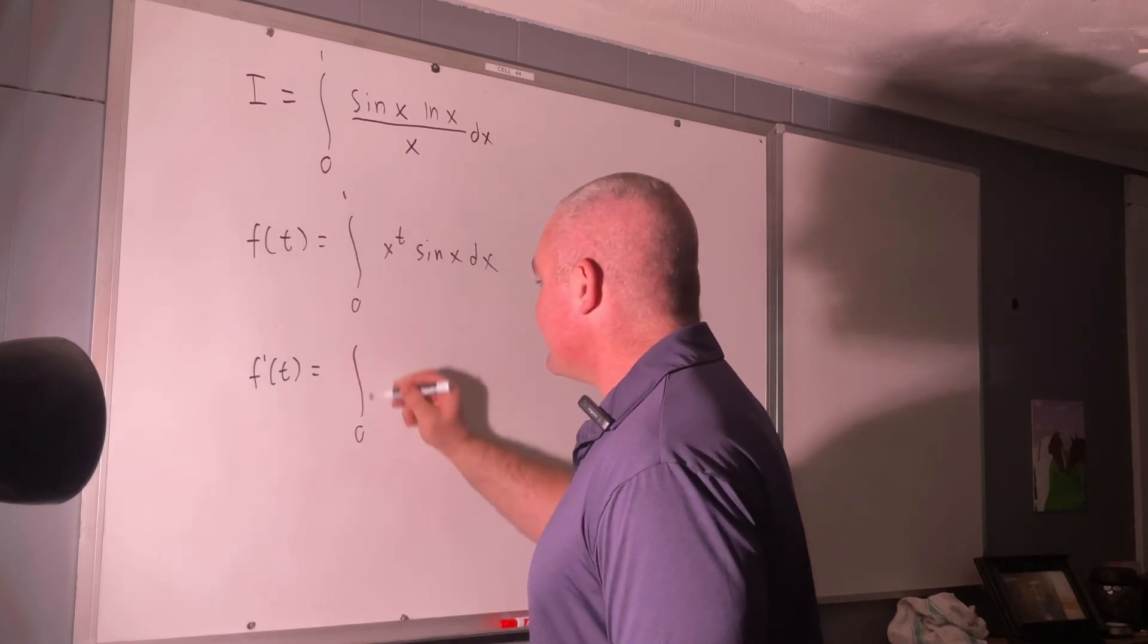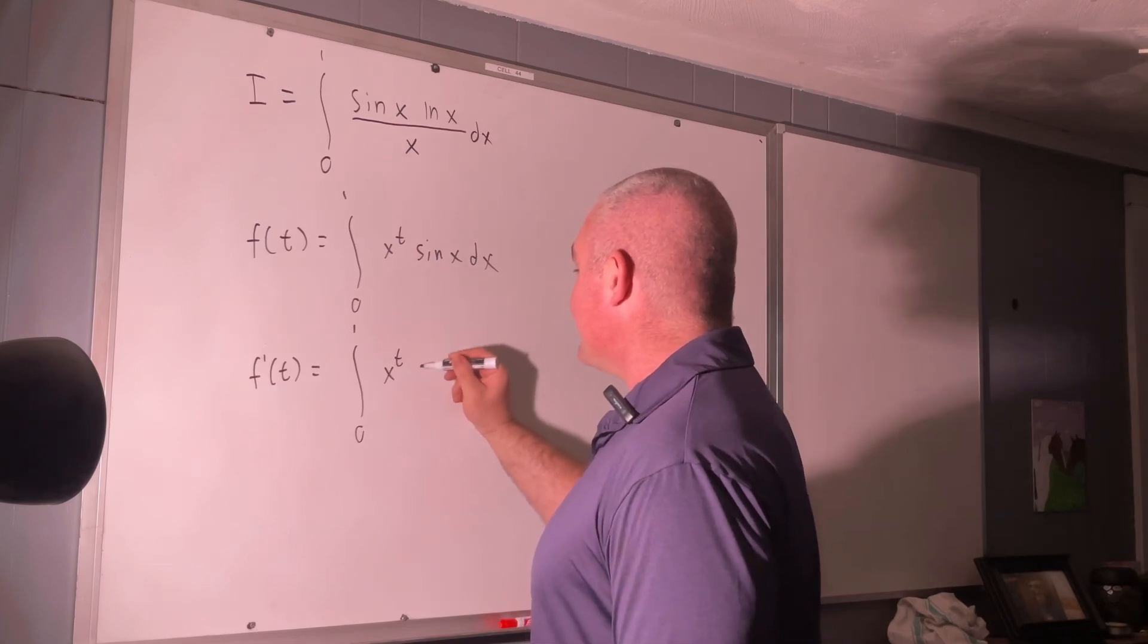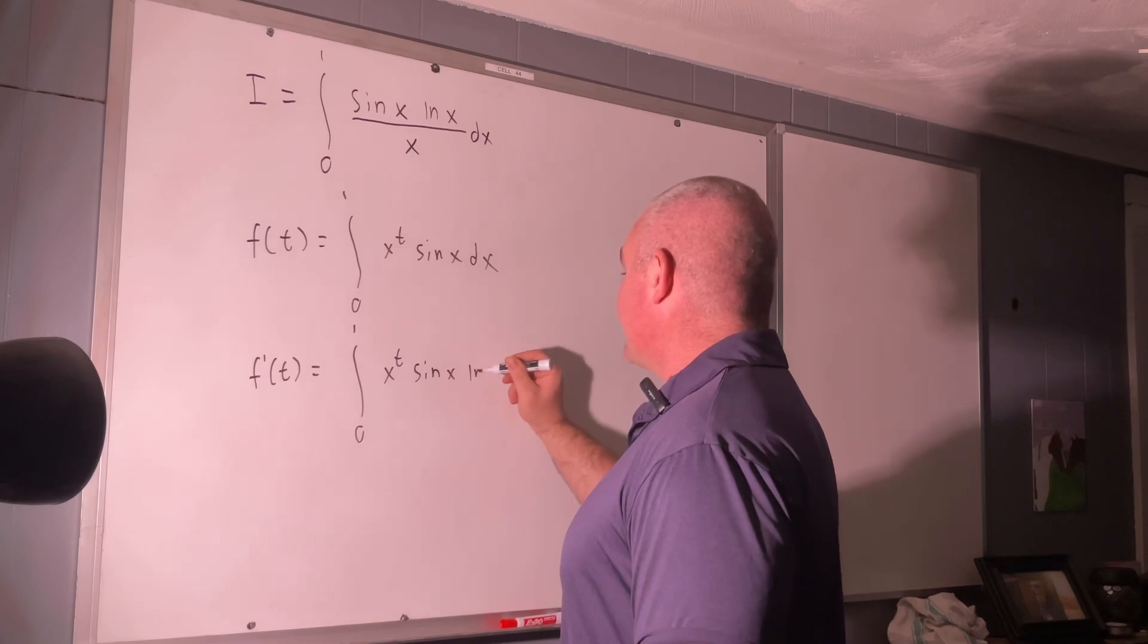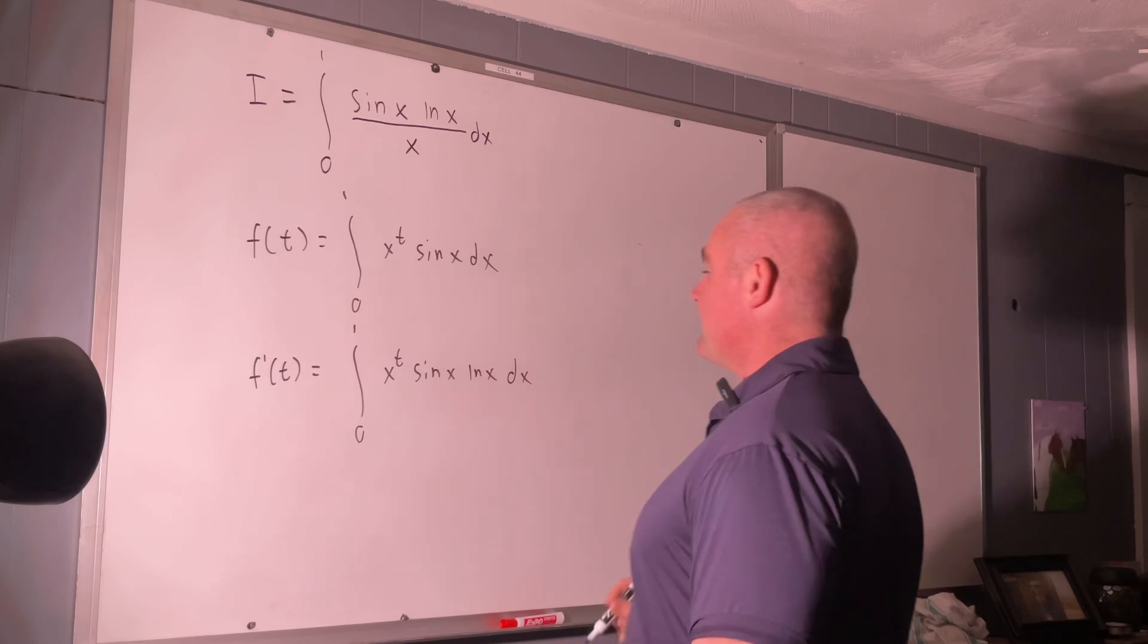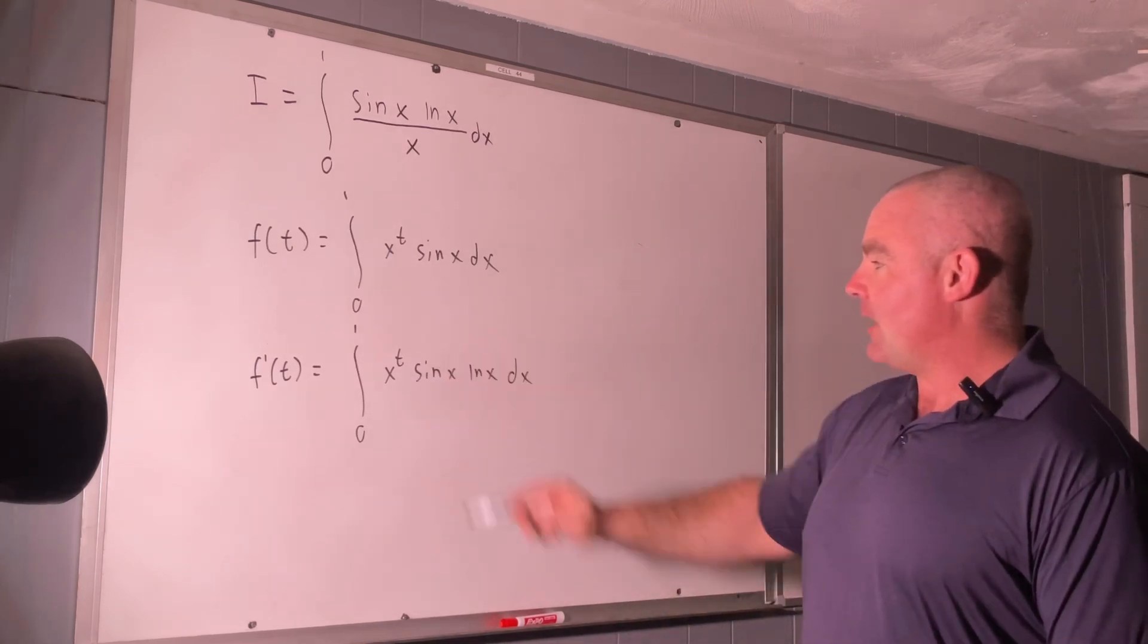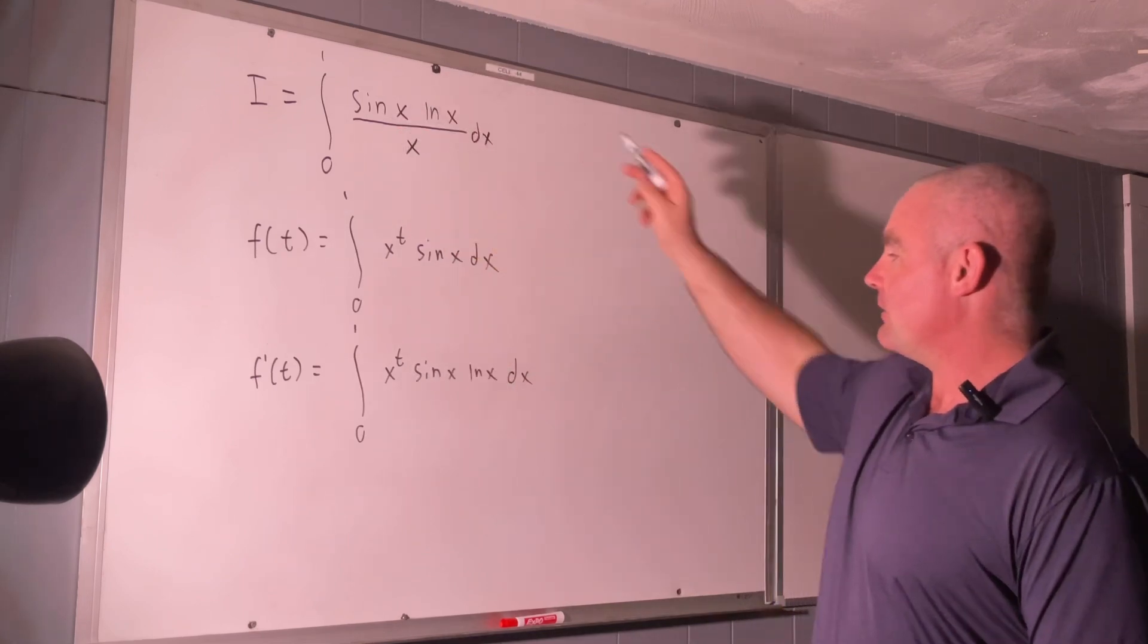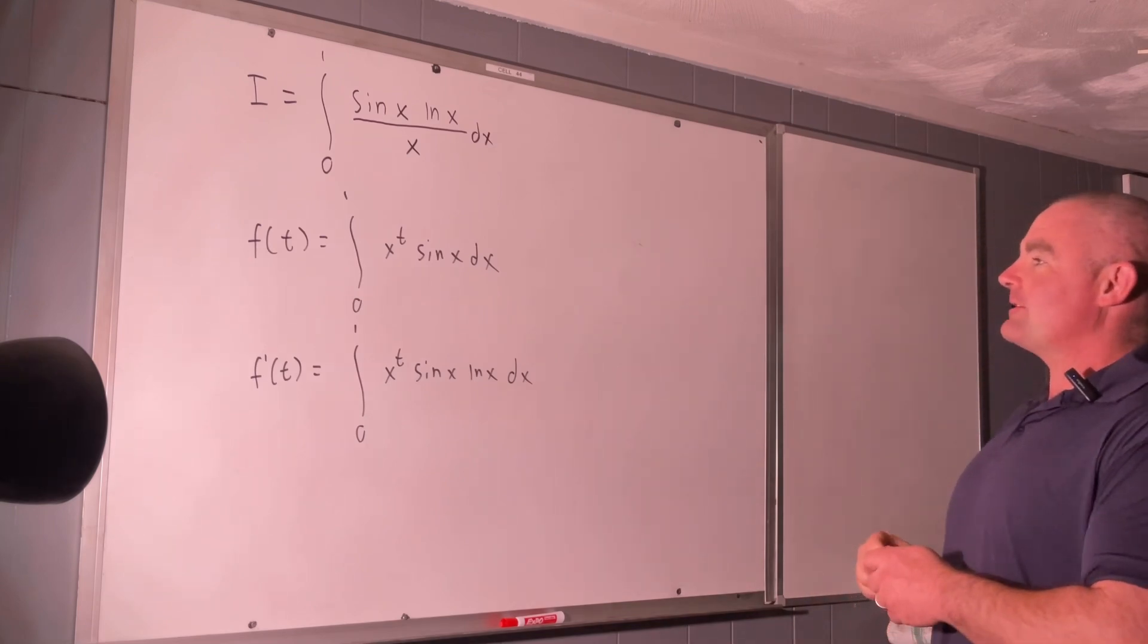We get the integral from 0 to 1 of x to the t, sin x natural log x dx. And from there, we can plug in negative 1 for t to recover our original integral. Alright, so how is this going to help us?